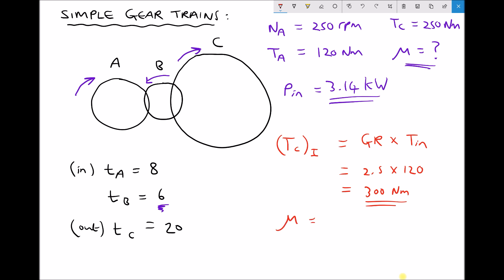So this time to calculate our efficiency we would have to do T_C actual divided by T_C ideal. It's basically a ratio of what we're getting out compared to what we're putting in or what we're getting out compared to the ideal value.